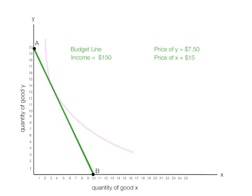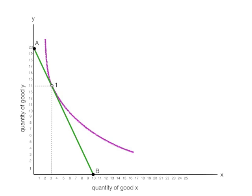I'm going to draw in the indifference curve, which is purple, and the consumer would consume at point 1, which is 14 of good Y and 3 of good X. If you did the math, it should equal $150 too.